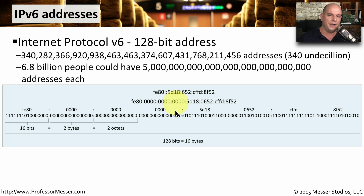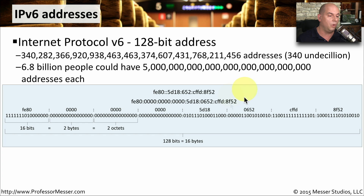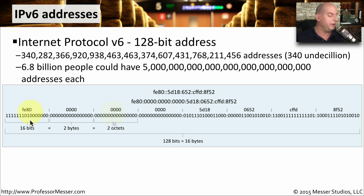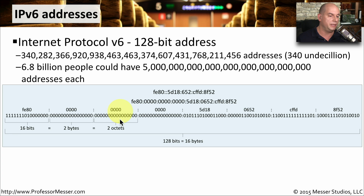You'll notice that the structure of IPv6 is also very different. We usually represent IPv6 addresses in hexadecimal instead of decimal like we did with IPv4. If we were to break it out into binary form, each one of these groups is 16 bits long, or two bytes, or two octets. You have a total of 128 bits, or 16 bytes, that makes up the IPv6 address.